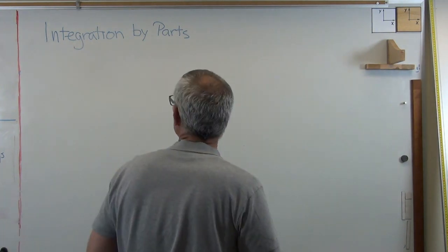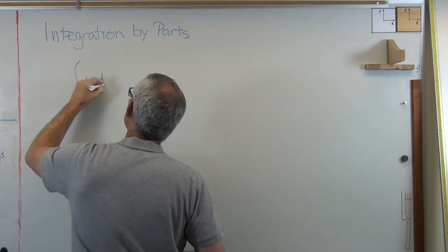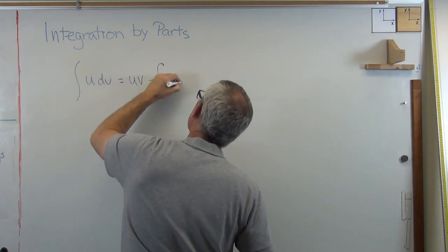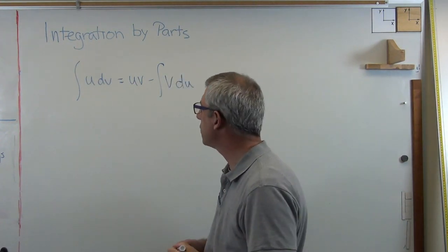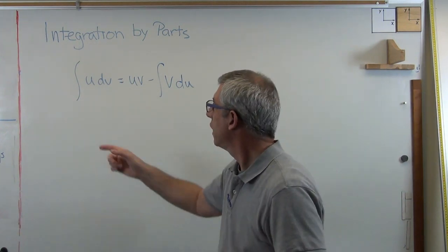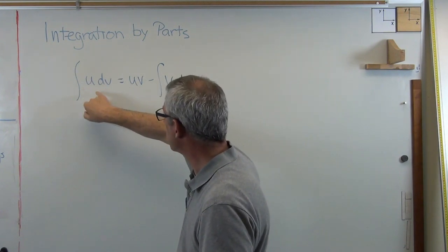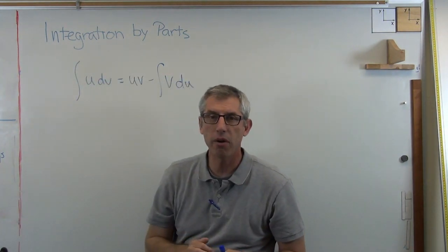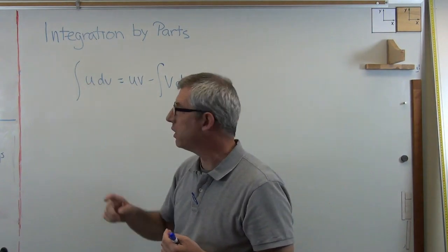So one of these methods is called the integration by parts. And it looks like this. If you want to integrate UDV, that's UV minus integral of VDU. Now, when I first saw this for the first time probably in high school, I looked at this and went, huh, what's U and V? U and V are just two functions. U and DV in this case are also two functions.